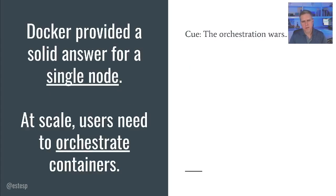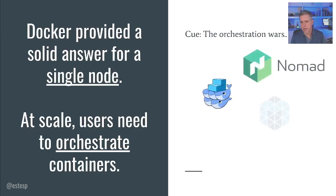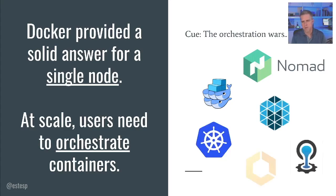Docker provided a solid answer for handling the container lifecycle on a single node. But almost as soon as Docker became popular, the use of containers in production showed that at scale, users needed ways to orchestrate containers. And just as fast as Docker had become popular, there were a bunch of popular orchestration ideas — everything from Nomad to Mesos to Kubernetes, and Docker even creating Docker Swarm. At this point, we have to dive into what it means to orchestrate containers, not just run them on a single node.